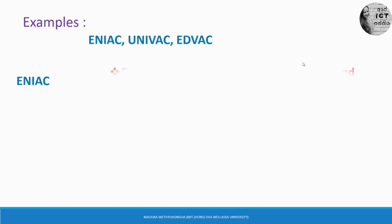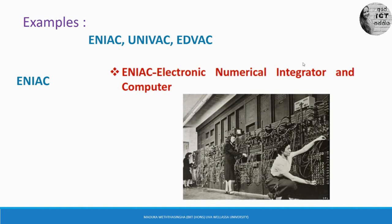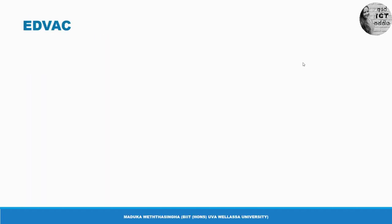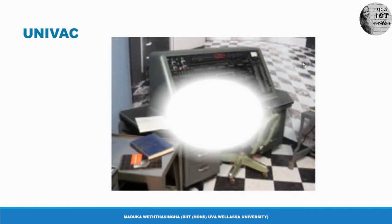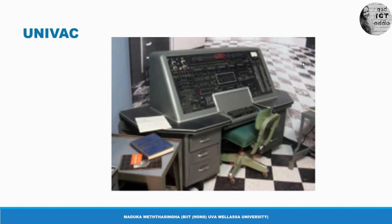You can see pictures of ENIAC, EDVAC, and UNIVAC computers. EDVAC is a large computer. These computers — UNIVAC and EDVAC — were built in the first generation using vacuum tubes. When it comes to the second generation, instead of the vacuum tube, they used transistors.